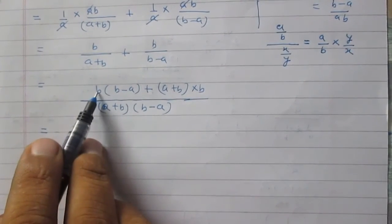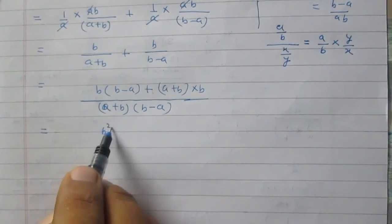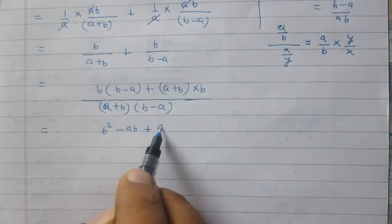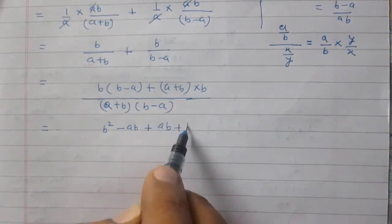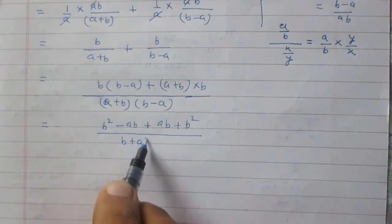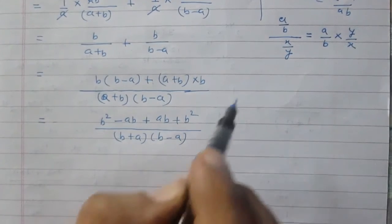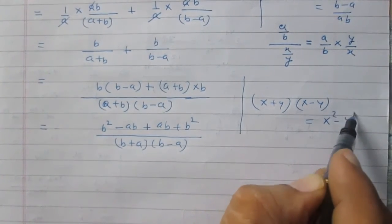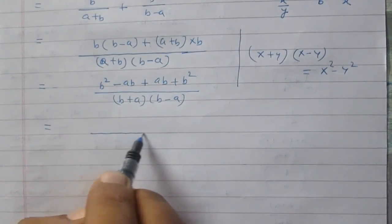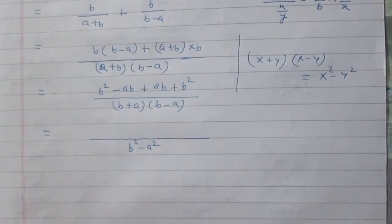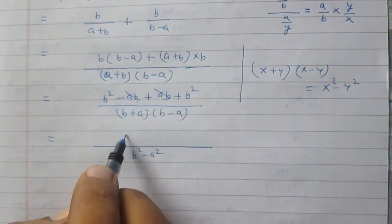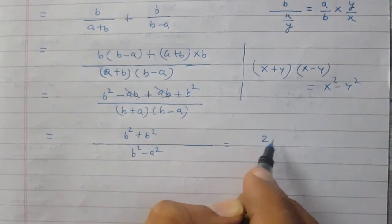Expanding the numerator: b times b minus a gives b squared minus ab, then plus ab plus b squared. We see that minus ab and plus ab cancel to zero, leaving 2b squared. The denominator b plus a times b minus a equals b squared minus a squared, using the identity (x+y)(x-y) = x squared minus y squared. So the final result is 2b squared divided by b squared minus a squared.